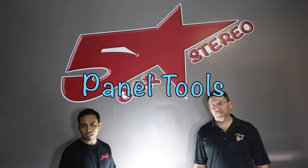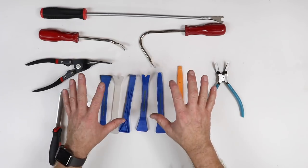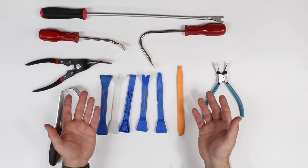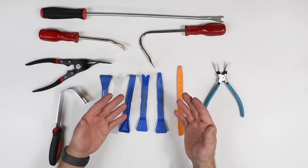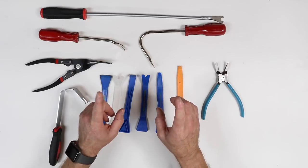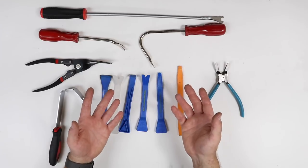Next up, panel tools and pry tools. Panel and pry tools come with all different shapes, sizes, functionalities, and yes, colors. They do different things. So depending on what you're trying to pry apart, you want to make sure you have the right panel tool for it. Because after all, you don't want to scratch, break, or bend something.